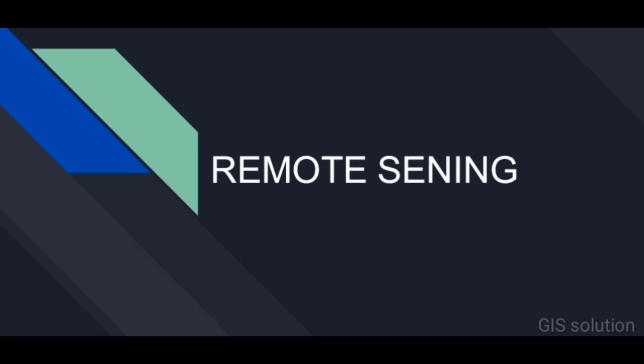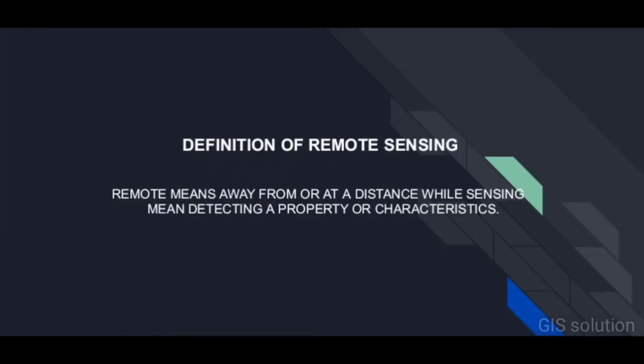Remote means away from or at a distance, while sensing means detecting a property or characteristic. Thus the term remote sensing refers to the examination, measurement, and analysis of an object without being in contact with it. Remote sensing is the science and art of acquiring information about earth's surface without actually being in contact with it.